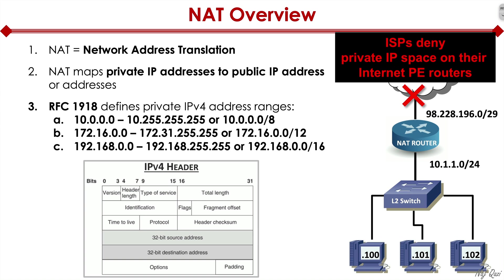RFC 1918 is exactly what allows different companies around the world to use the same IP addressing. For example, in your home office you may have machines configured with 192.168.1.0/24, and at work you may have the exact same space — yet both can access the internet. If millions of people use the same address space, which is actually the case, there would otherwise be a conflict. NAT — network address translation — takes the private IPs and maps them to a public IP or IPs, and that traffic eventually makes it to the internet.